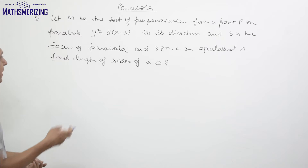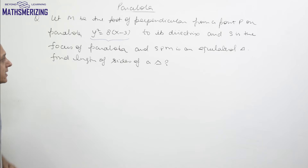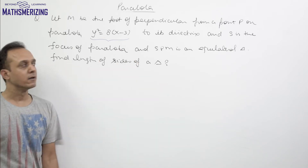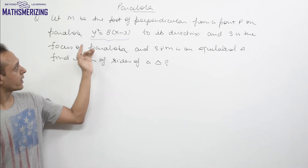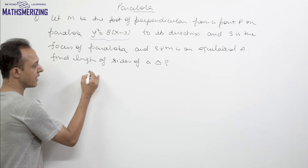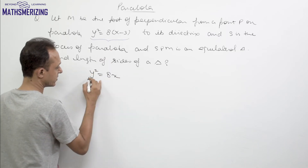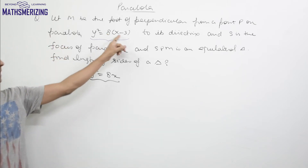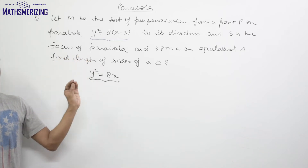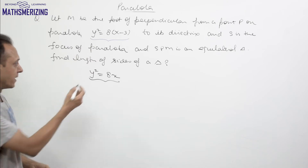We are given the parabola y² = 8x − 3, but since we just need to find the length of the side of this triangle, without loss of generality I'll take the parabola as y² = 8x. We won't take the x − 3 shift because we are not supposed to find any particular point on the parabola, so it is essentially the same question.